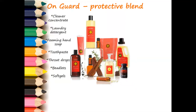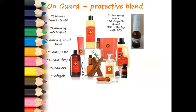On Guard is so popular that doTERRA made a whole line of products with it: cleaner concentrate, laundry detergent, soap, toothpaste, throat drops, beadlets, and soft gels. The On Guard throat drops are for a dry, scratchy, or sore throat; the Breathe drops are for coughs — they each do what they're designed for. To make your own hand sanitizer, take a 15ml spray bottle, put in 20 drops of On Guard, and fill the rest with fractionated coconut oil, which stays liquid at all times.